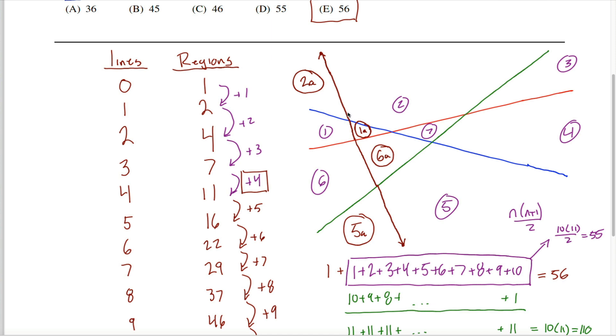The line will always start, in big old air quotes because lines don't start, in one of the regions. And then it'll always move to another region each time it crosses a line. When I'm drawing my fourth line, there's already three lines out there, so it has to cross three lines. So I start out in one region, and then I move to a new region each time I cross one of these three lines. This fourth line is going to traverse four different regions, one more than the number of lines that existed.